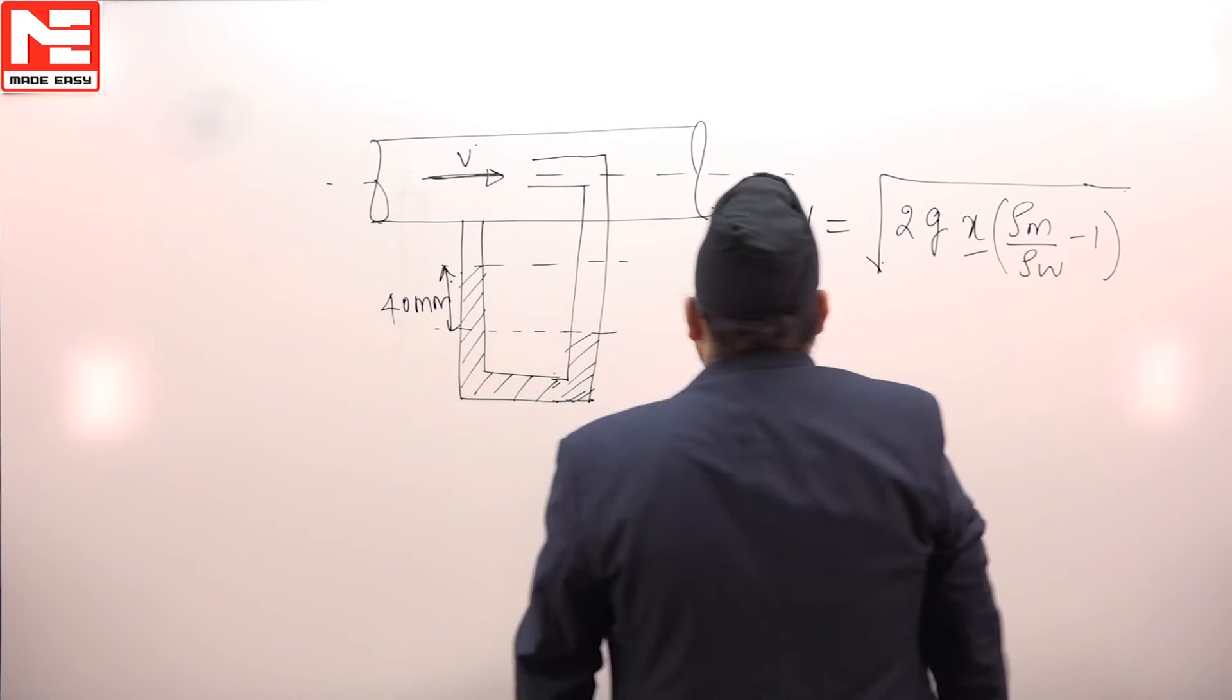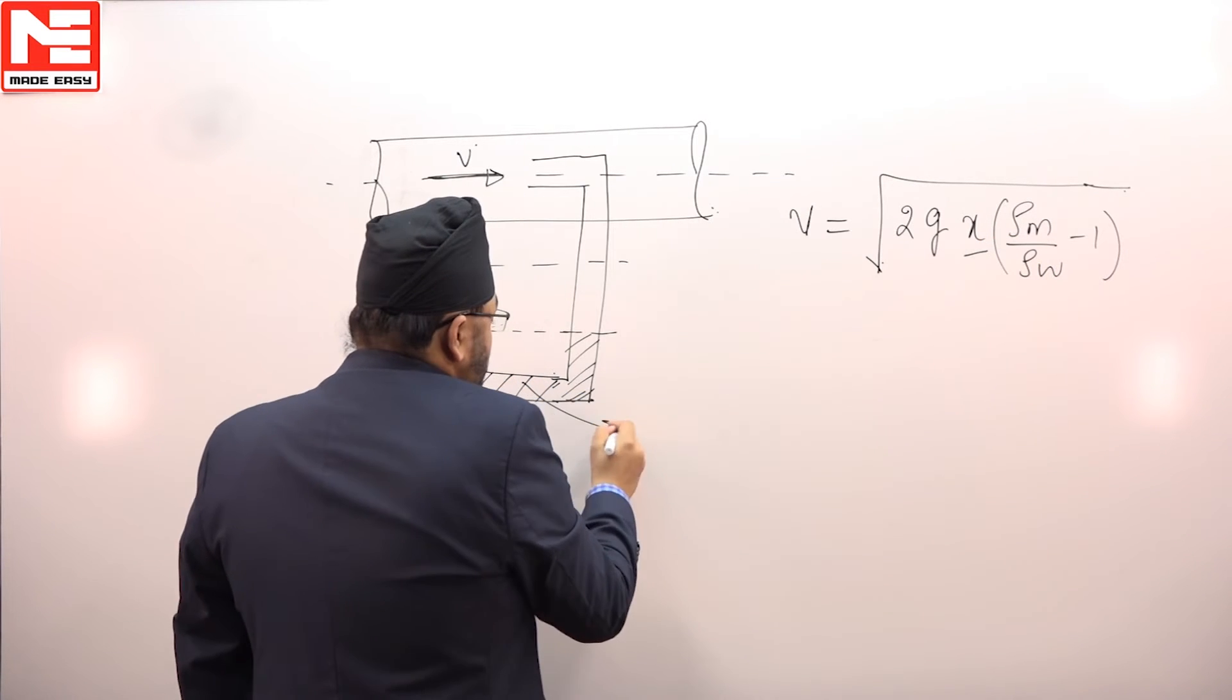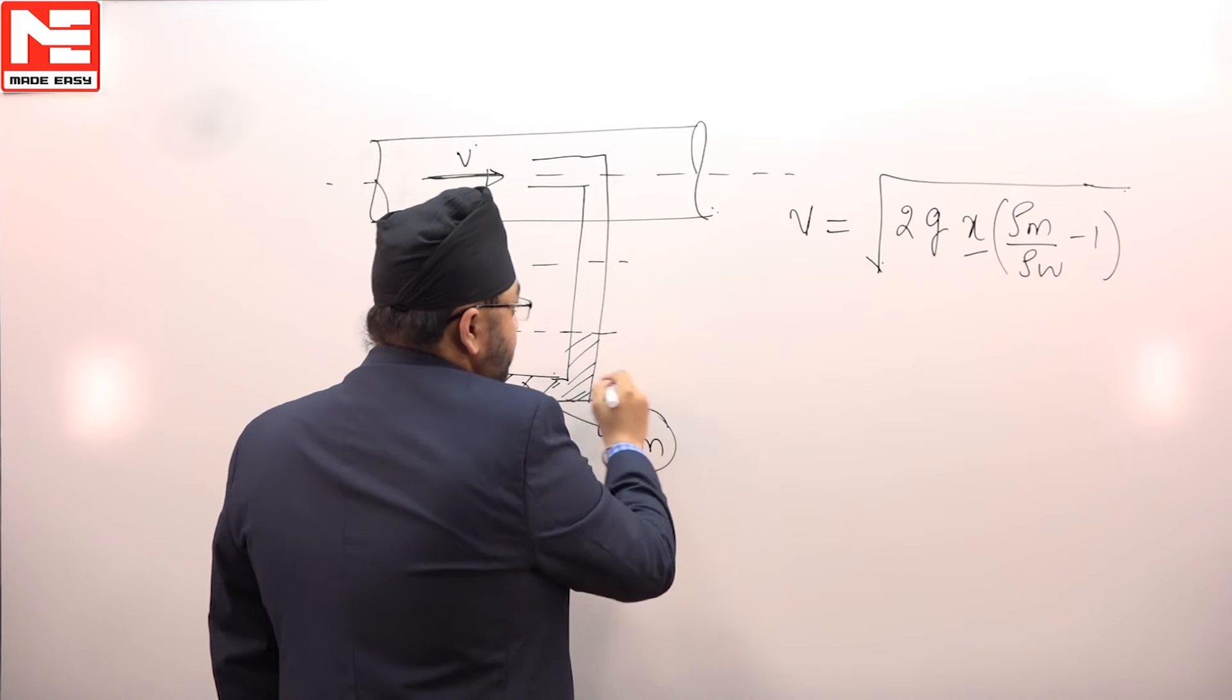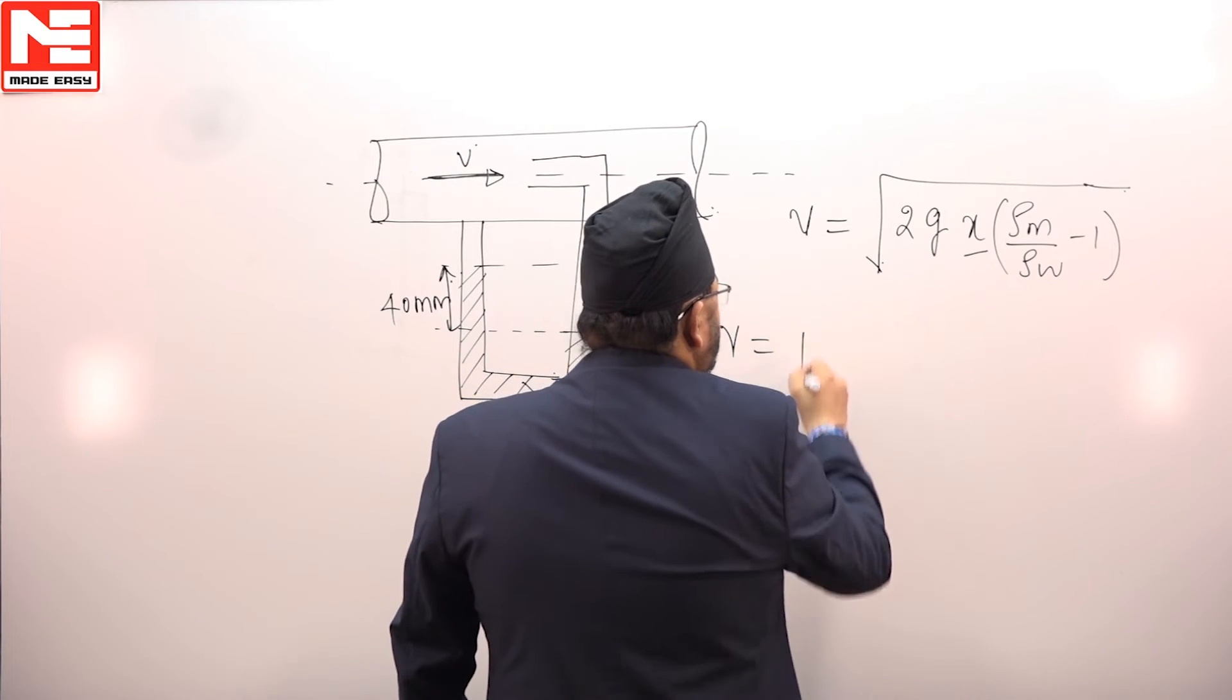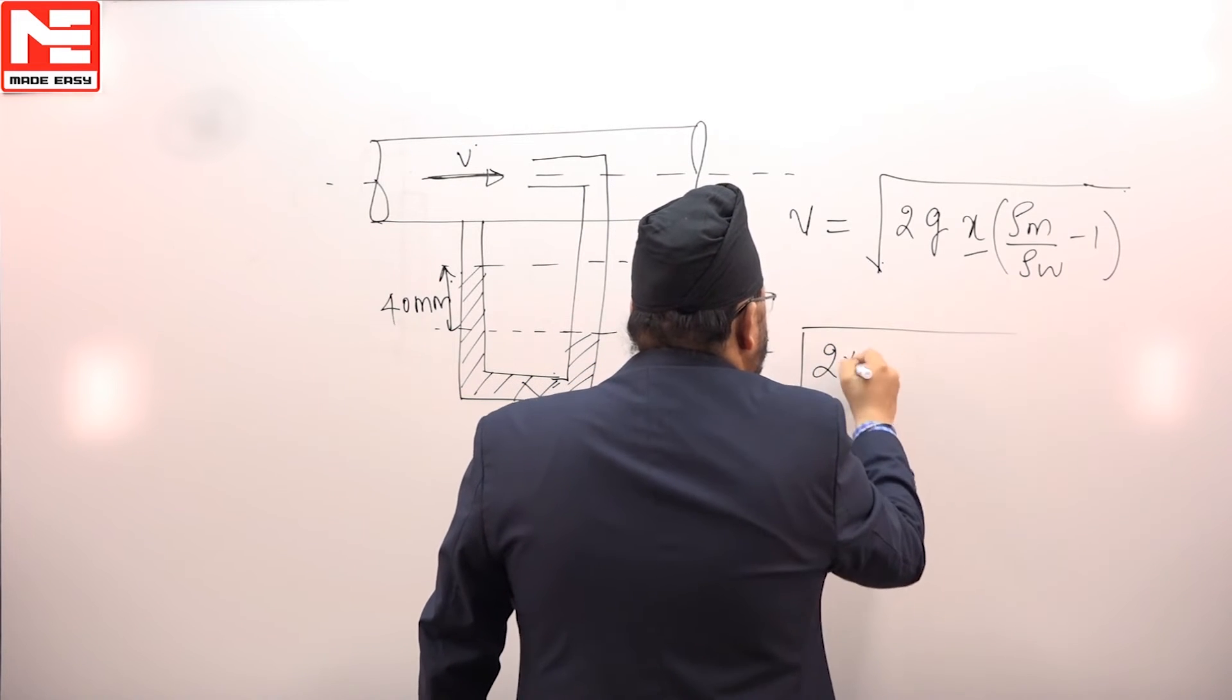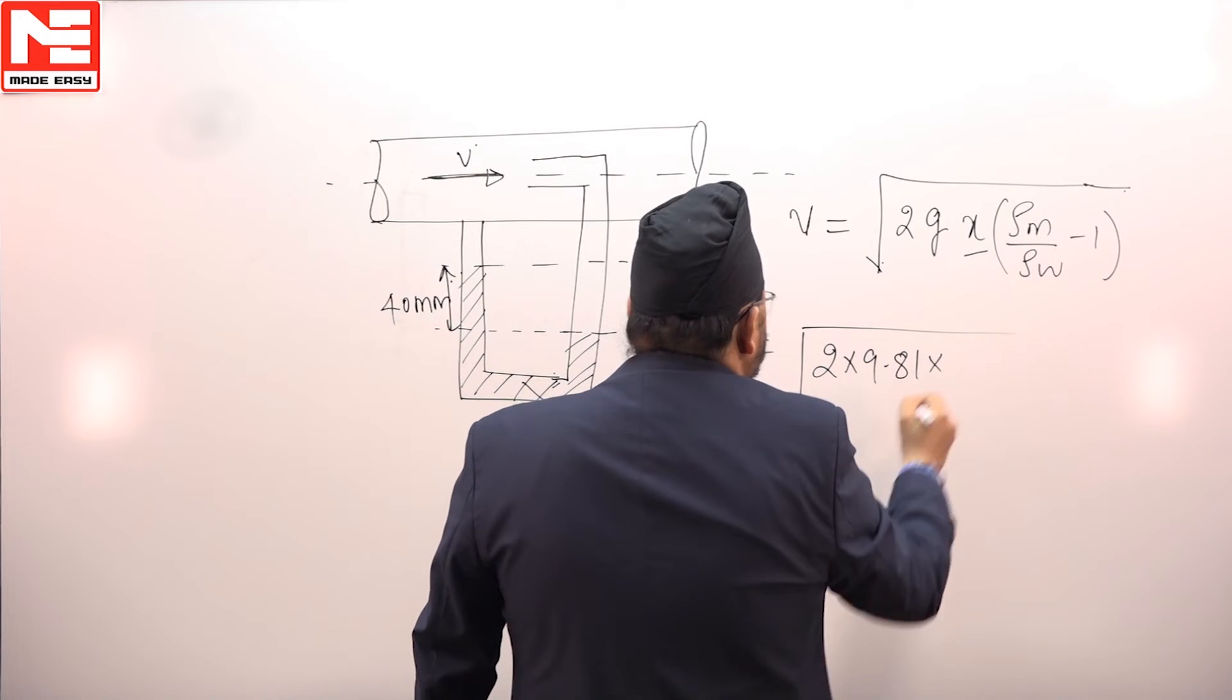What is x? Difference, this is manometric fluid. So 2 g is 9.81, what is value of x? X is the difference in the level of manometric fluid in two limbs of manometer.